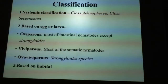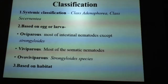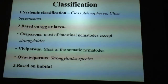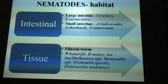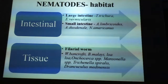There are different types of classification: one is systemic, one more is based on larval forms, and one more is based on habitat — meaning where they are going to live. Based on habitat, nematodes are divided into intestinal and tissue nematodes. Intestinal nematodes are further divided into large intestinal and small intestinal.